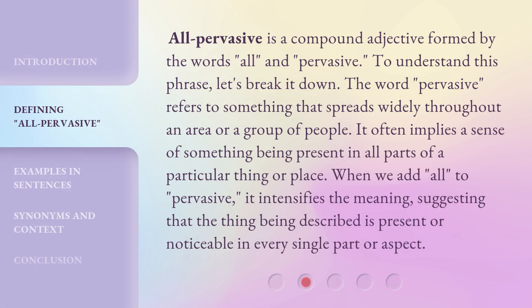All-pervasive is a compound adjective formed by the words all and pervasive. To understand this phrase, let's break it down. The word pervasive refers to something that spreads widely throughout an area or a group of people. It often implies a sense of something being present in all parts of a particular thing or place.